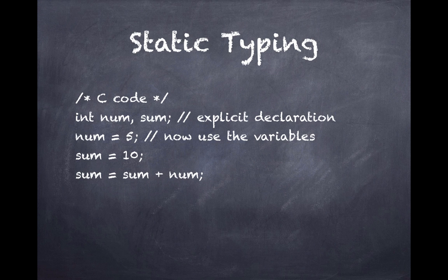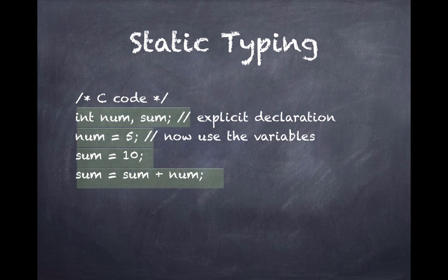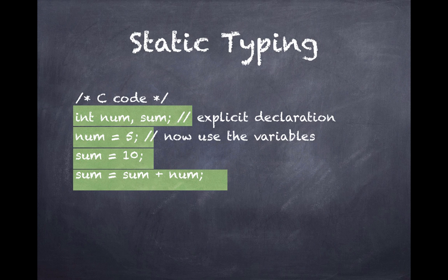The first type is static typing, which is kind of the superset of the other three. Here we are trying to add two values, sum and num. Sum has been assigned 10 and num has been assigned 5. But what you really notice is that they have to initialize the code and explicitly declare both these as integers.